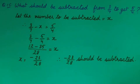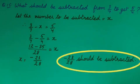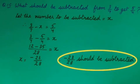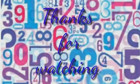And when we solve 3 upon 7 minus 5 upon 4, we get minus 23 upon 28 as value of x. So minus 23 upon 28 should be subtracted. Thanks for watching.